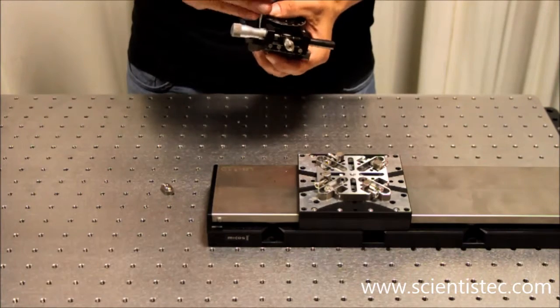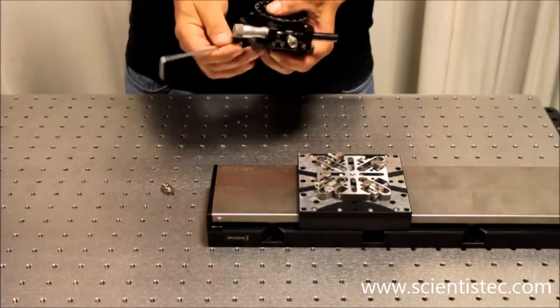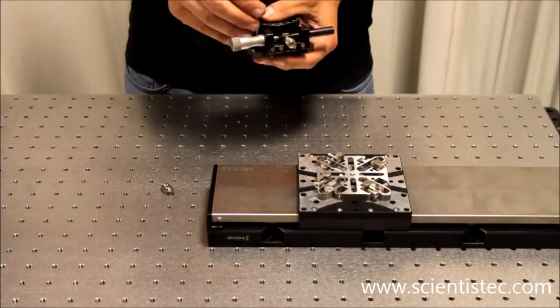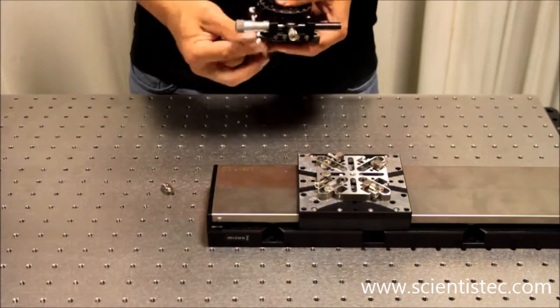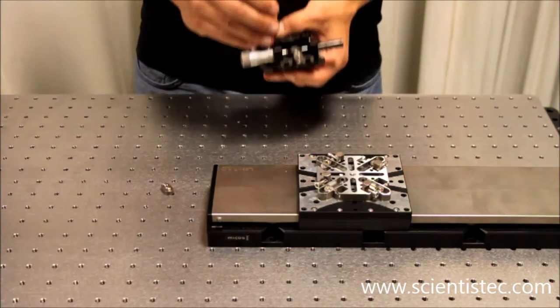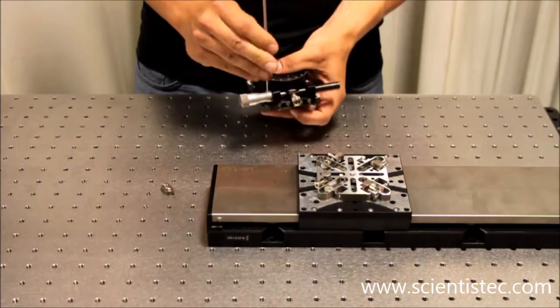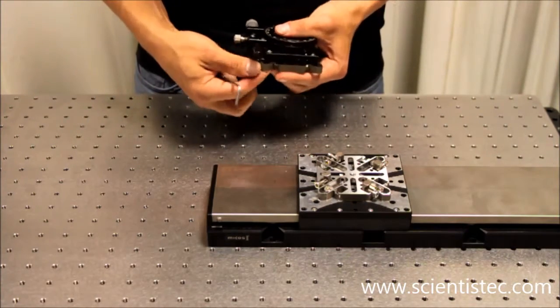Hence, there is the possibility to use all common types of screws. The BeamLine adapter itself and all the accessories consist of stainless steel. Therewith, they are appropriate for cleanroom and vacuum applications.